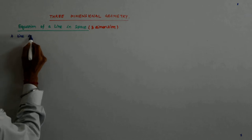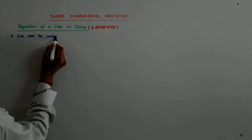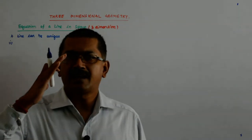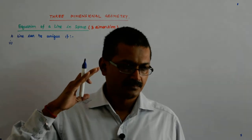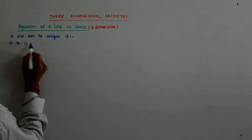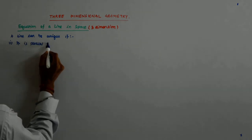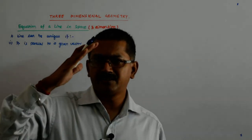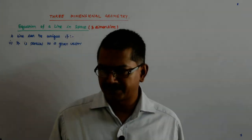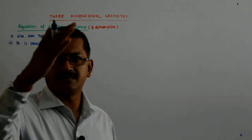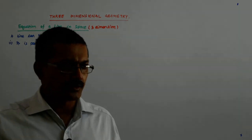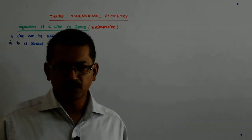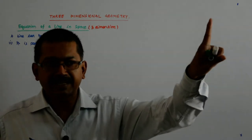A line can be unique if — number one — it is parallel to a given vector. But if it is only parallel to a given vector, there will be an infinite number of lines satisfying that condition. All the lines in this space which are parallel to it will satisfy this condition. So that alone does not give us a unique line.